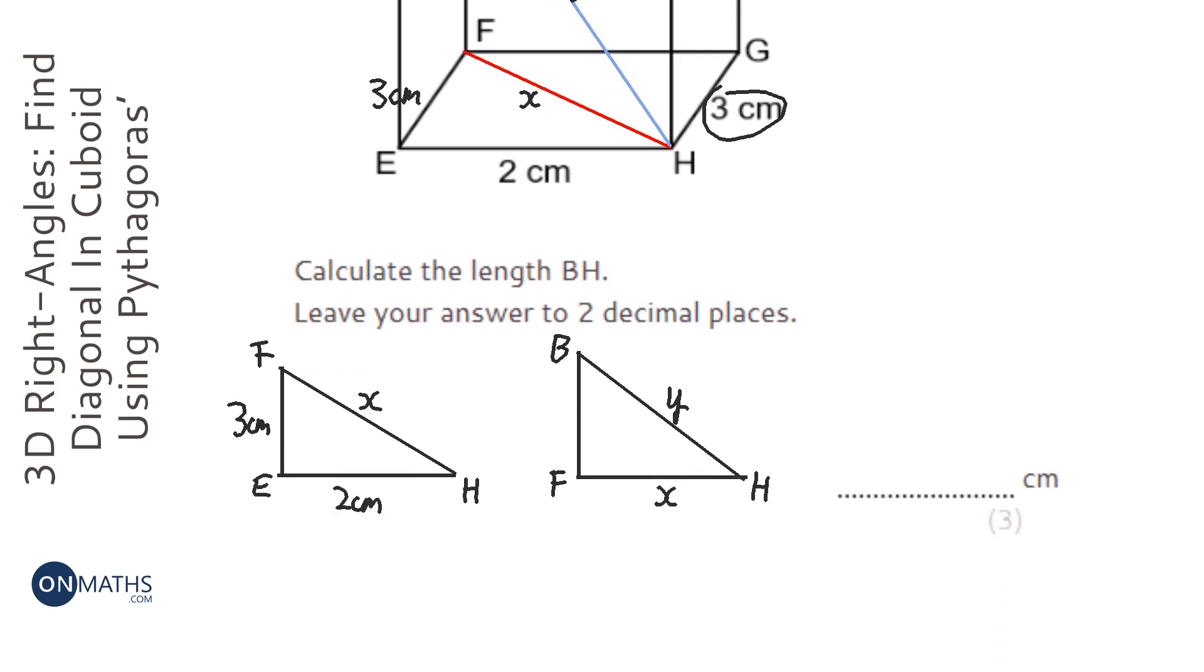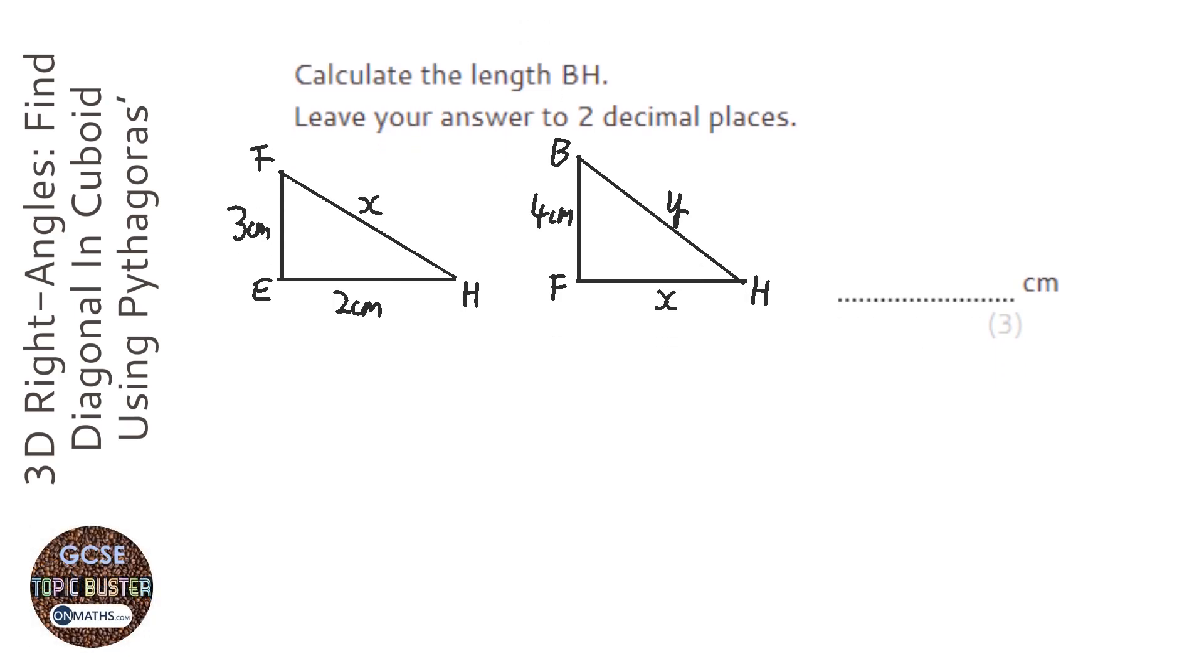Now to work out what x is, we use Pythagoras' theorem - loads of stuff on the site to help you with that if you don't know. Three squared is 9 plus 4 squared is 13, so x equals root 13.